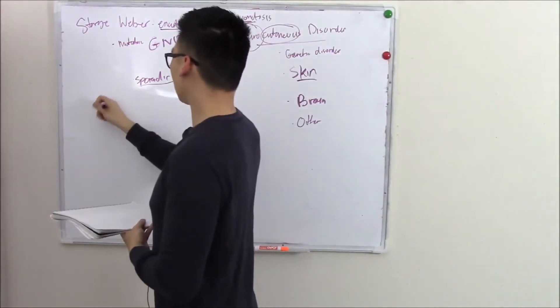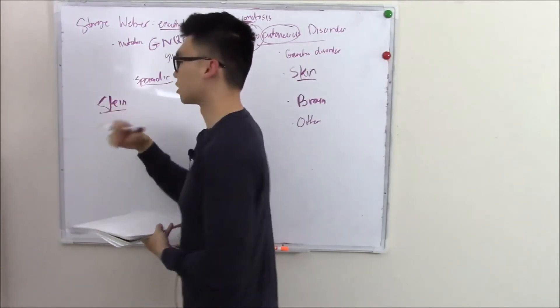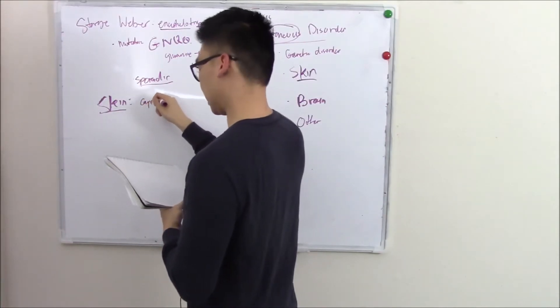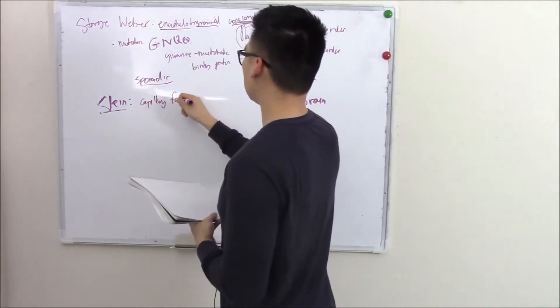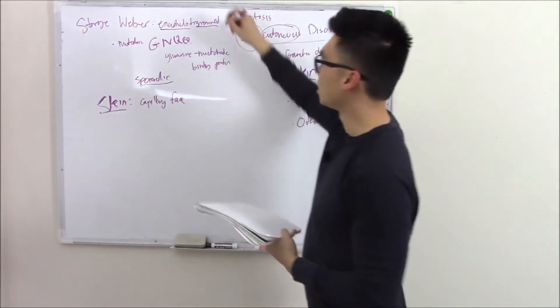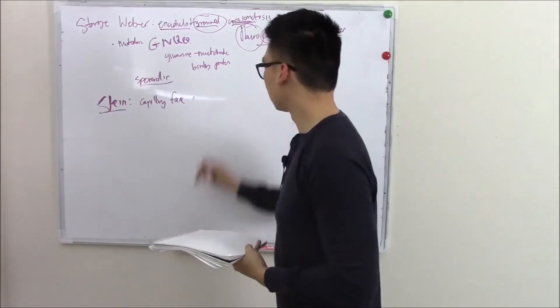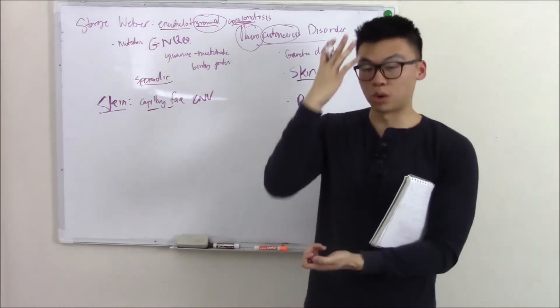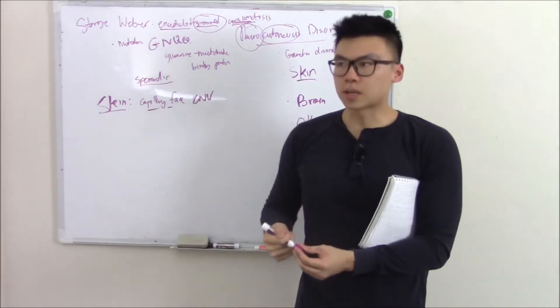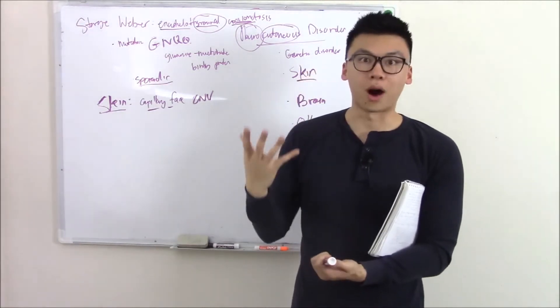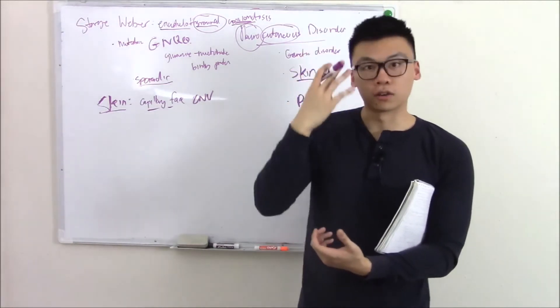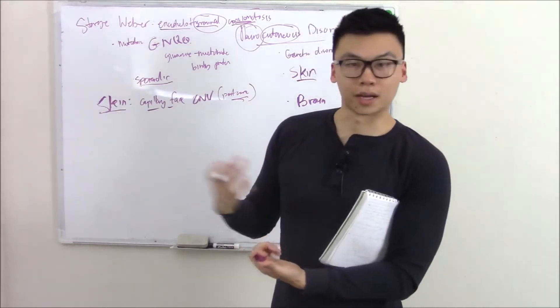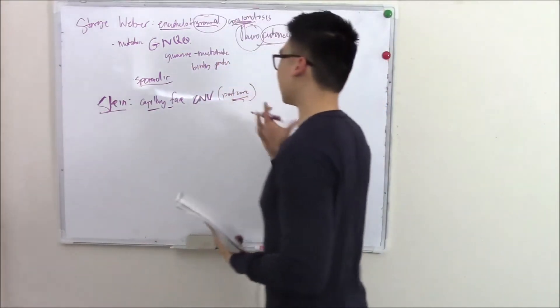Let's first talk about the skin manifestations. Skin manifestation affects your blood vessels, the capillaries in your skin, especially in your face, in the distribution of your trigeminal nerve, cranial nerve five. You see these mutated blood vessels, these red lesions on that distribution. We sometimes call that a port wine stain because it looks like wine, involving your blood vessels over the face. That's a pretty easy thing to recognize.